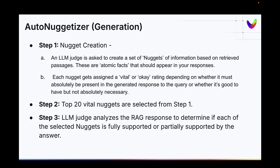AutoNuggetizer is the generation metric. It doesn't require golden answers and works a little differently. There are three steps: the first is nugget creation, where you create atomic units called nuggets. Then for each nugget, you assign a vital or okay rating and select the top 20. Then an LLM judge analyzes the response from your RAG to determine if each of the selected nuggets is either fully supported or partially supported by the answer. You can see all of this in the papers in much more detail.